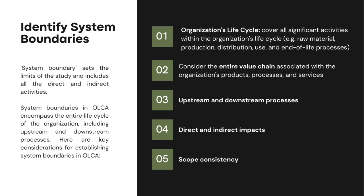The second element also discussed in the first phase is the system boundary, which sets the limits of the study and includes all direct and indirect activities. There are key considerations for establishing a system boundary in OLCA. First, the organization's life cycle: the system boundary should cover all significant activities, for example, raw material, production, distribution, use, and end-of-life processes. Second, the boundary should also consider the entire value chain associated with the organization's products, processes, and services, involving suppliers, contractors, and other entities involved in value creation.